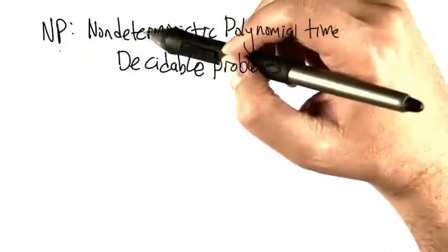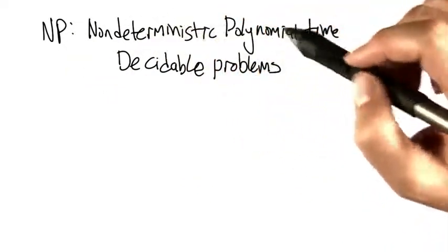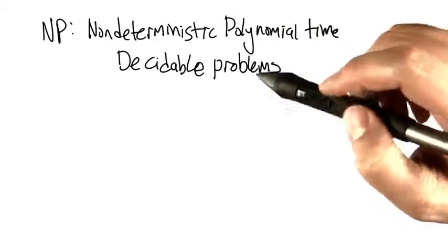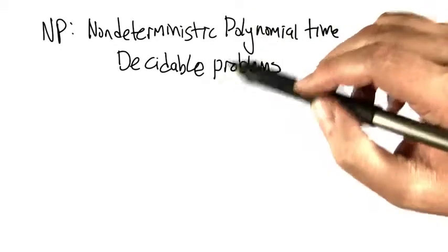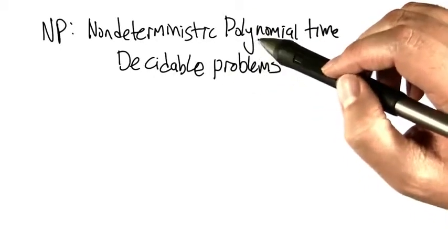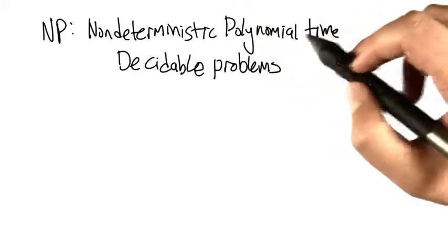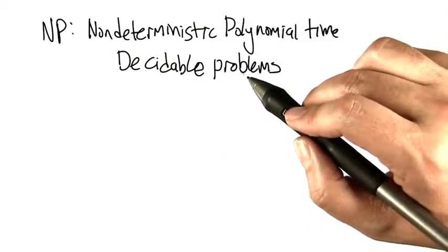Formally, the class NP is the set of non-deterministic polynomial time decidable problems. That is to say that it's a problem that can be solved by a program that runs in polynomial time but has non-deterministic elements in it.